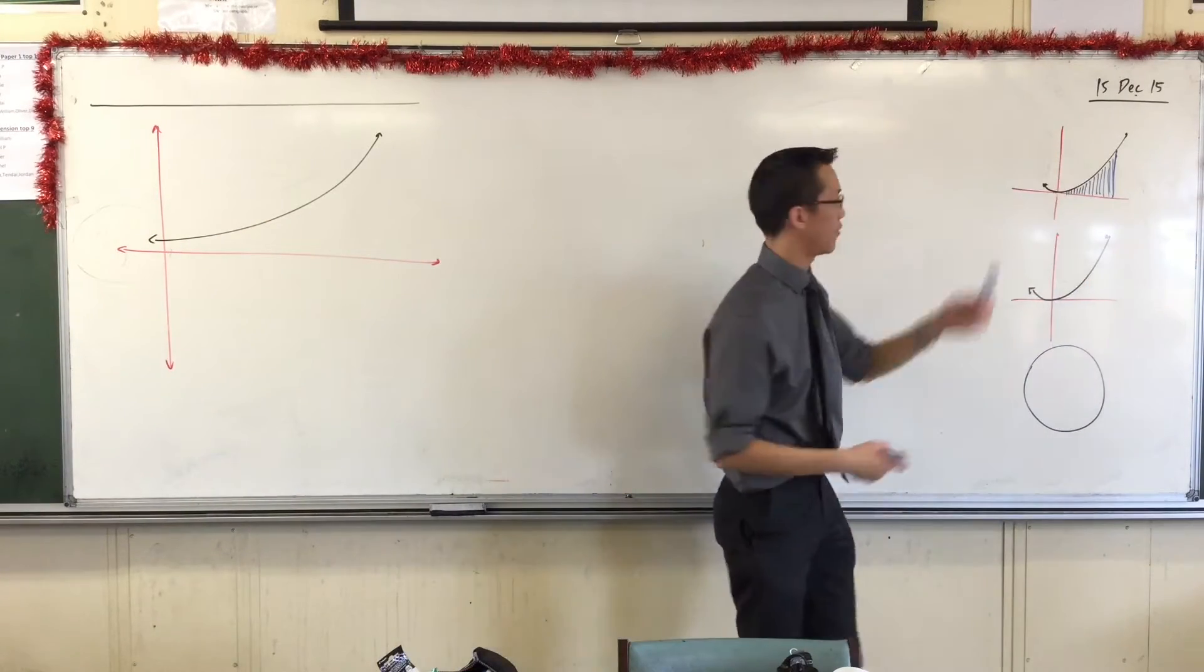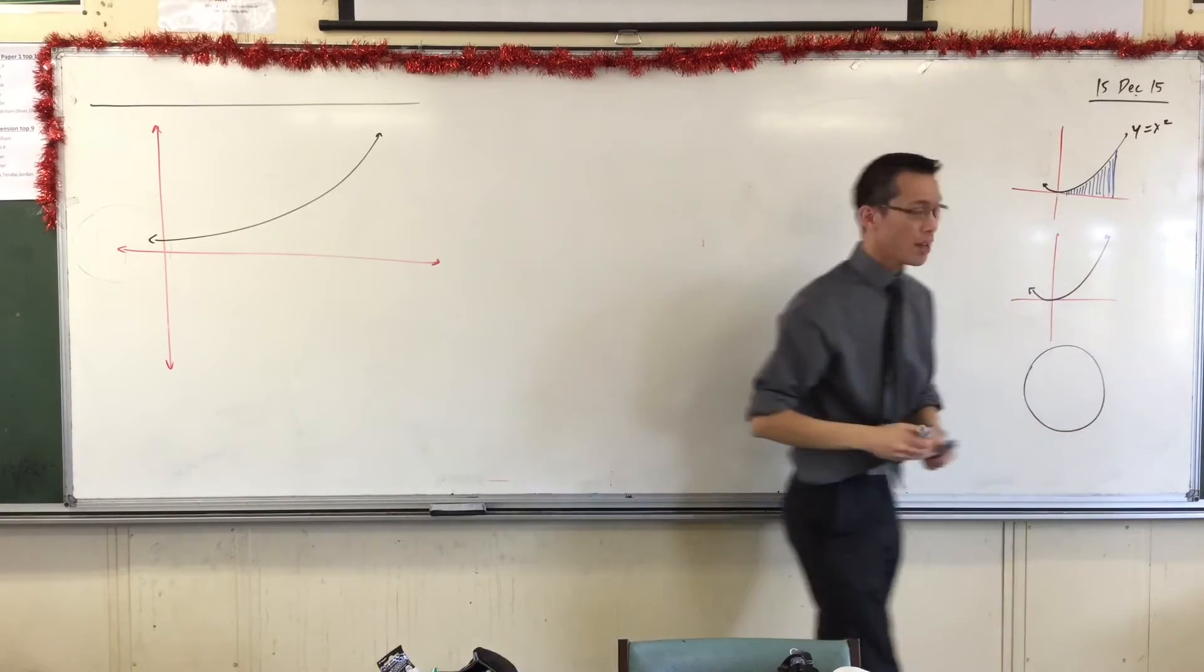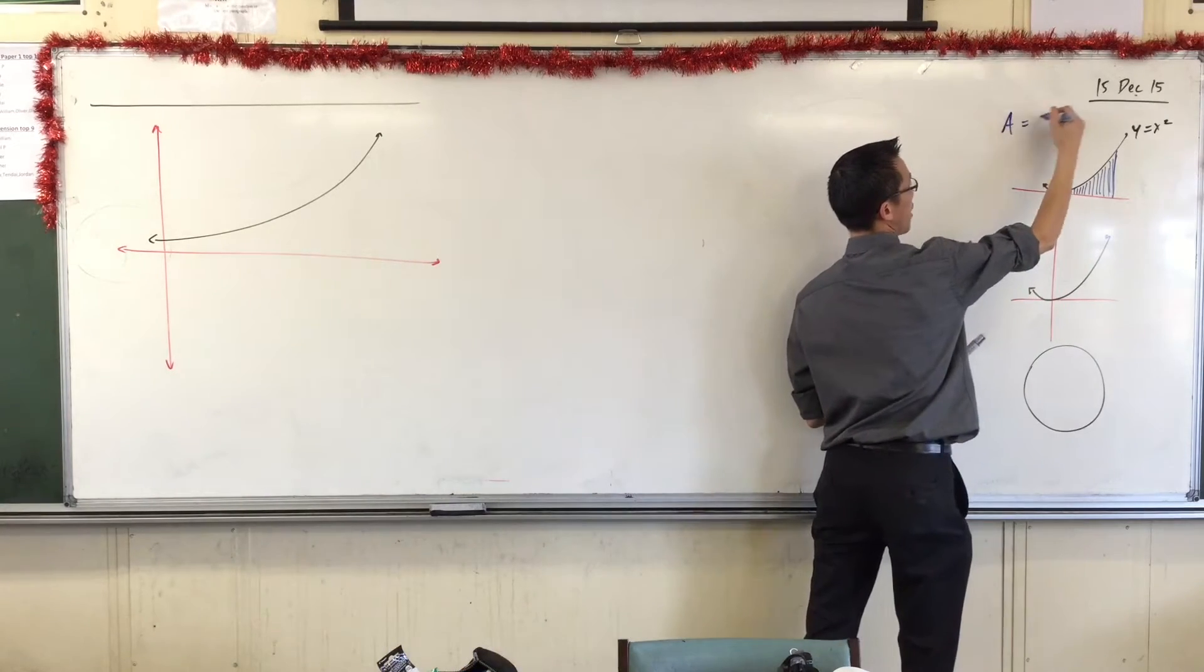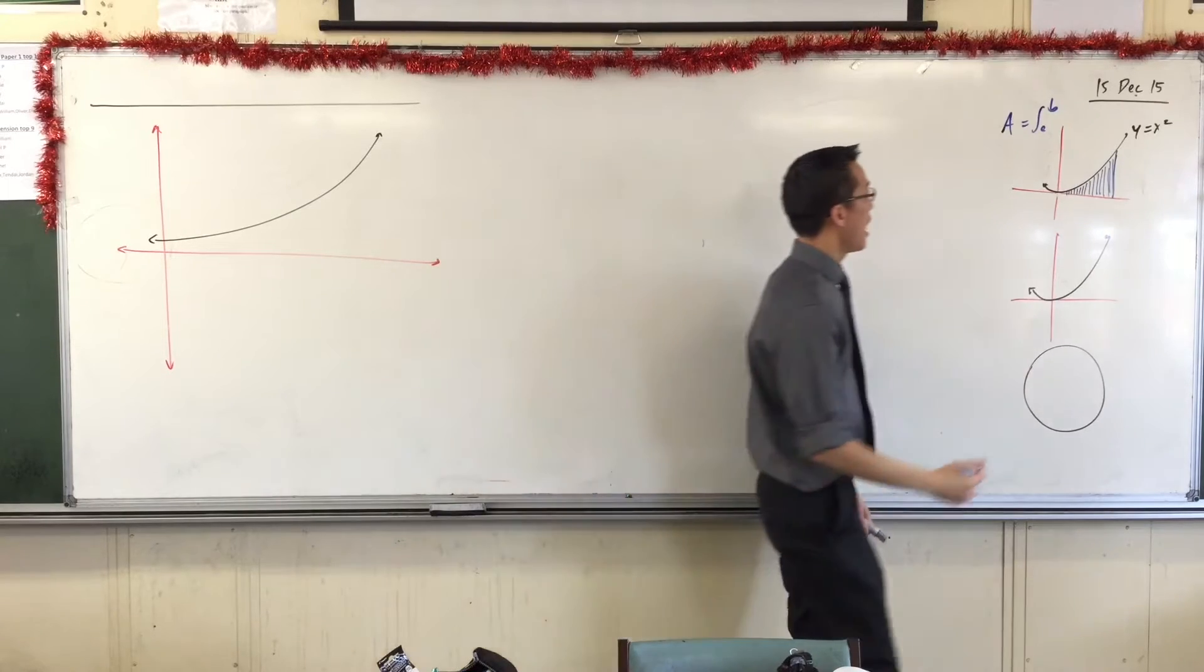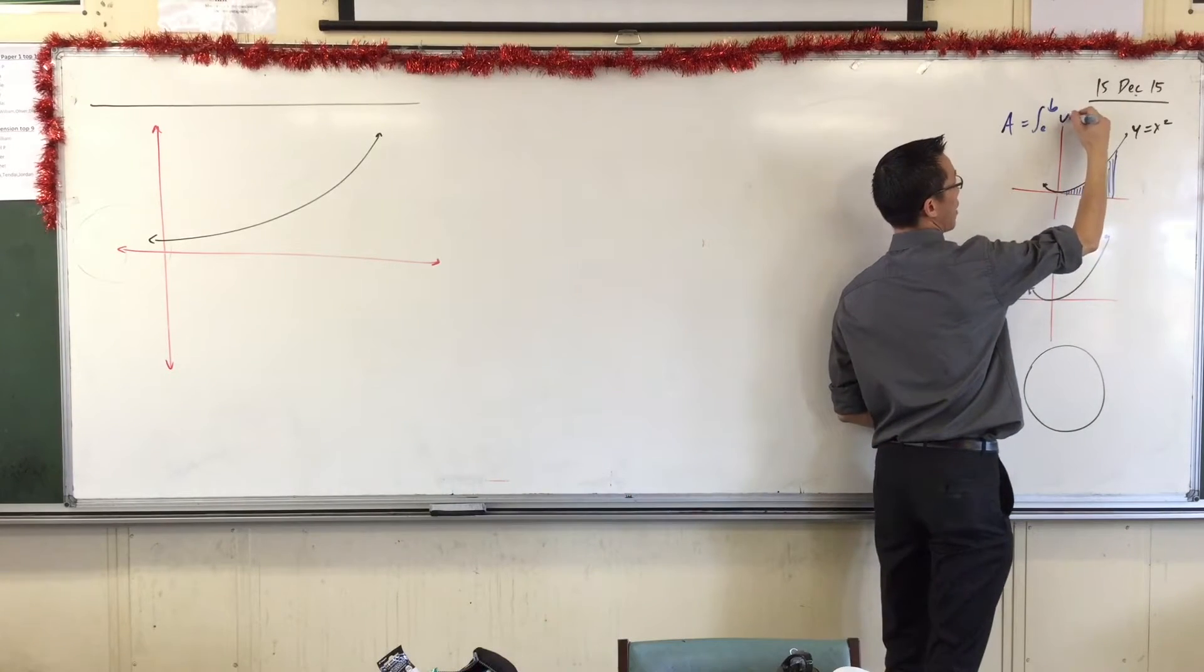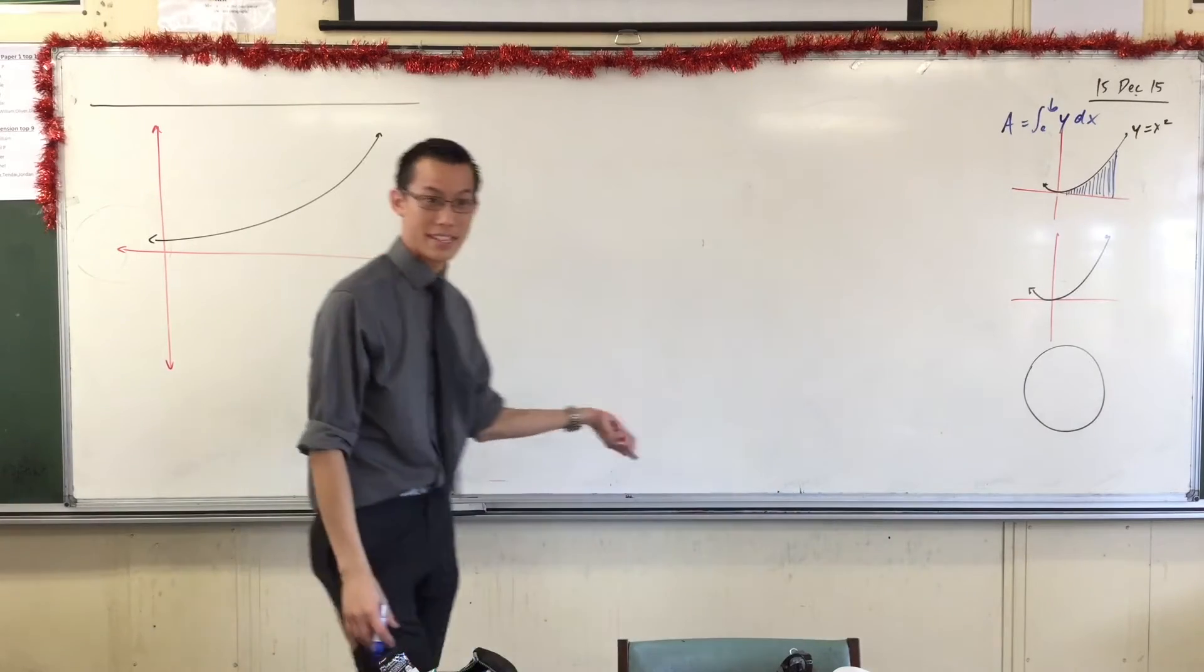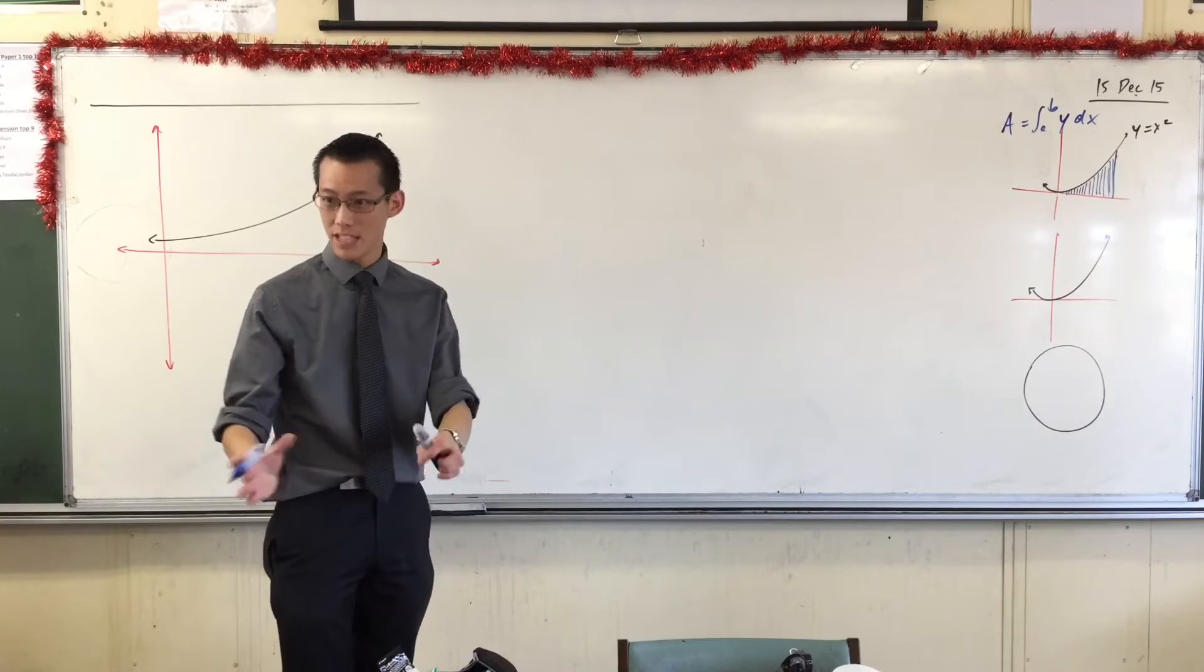So for example, in this case, if I just said maybe this is y equals x squared, the way I would form this area is you get your upper and lower bounds, and then you would say integrate y with respect to x, so that would be x squared dx, you get x cubed on 3, you'd evaluate at the boundaries, and so on. Does that make sense?